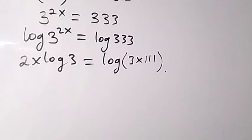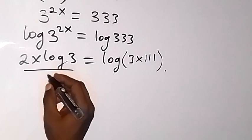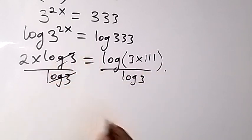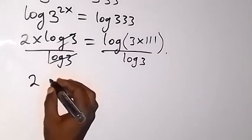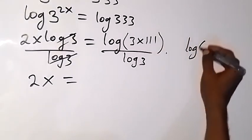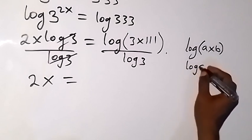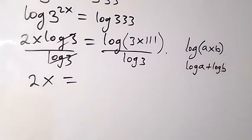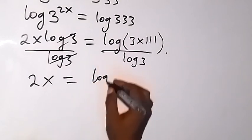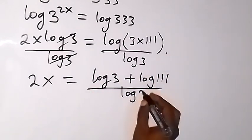From here, since we are interested in finding the value of x, let's remove this log 3 on this side. Therefore, that means we divide both sides by log 3. When we divide this side by log 3, they cancel each other and we are left with only 2x. We have 2x which is equal to, when we have product of two numbers in log, like we have log a multiplied by b, we can split it into two, we have log a plus log b. So when we apply the same thing to log 3 times 111,